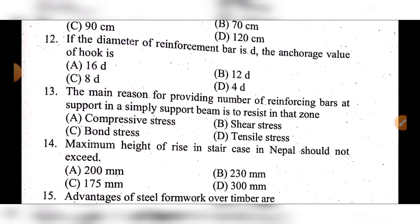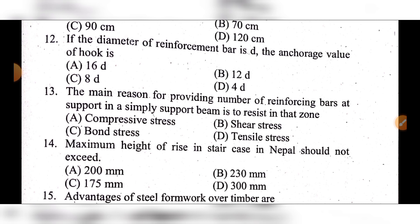Question 13: The main reason for providing a number of reinforcing bars at the support in a simply supported beam is to resist in that zone — option A: compressive stress, option B: shear stress, option C: bond stress, option D: tensile stress. The answer is option C: bond stress.